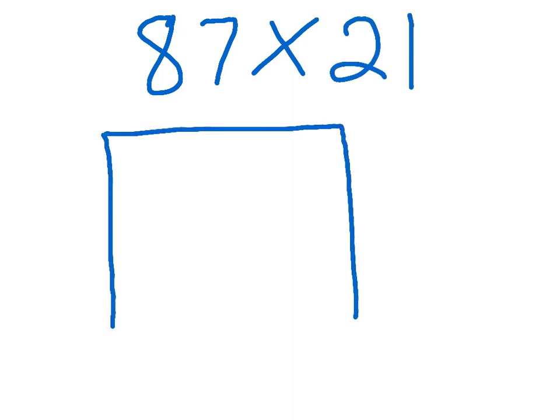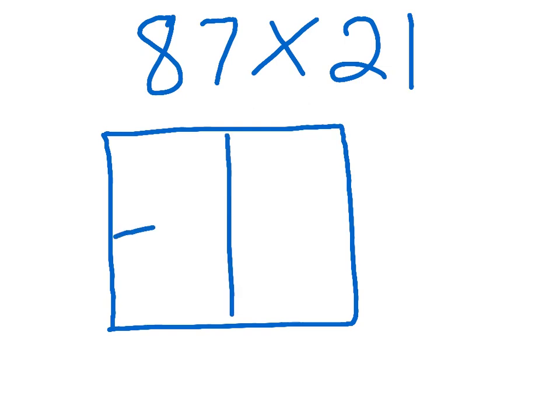So we will draw a box that has four sections, one for each place value part of our numbers: 80 and 7, and 20 and 1.